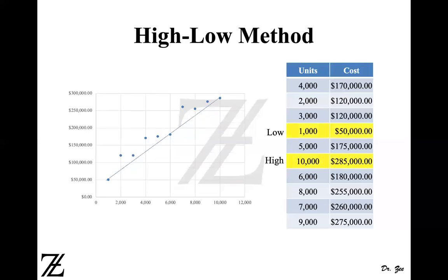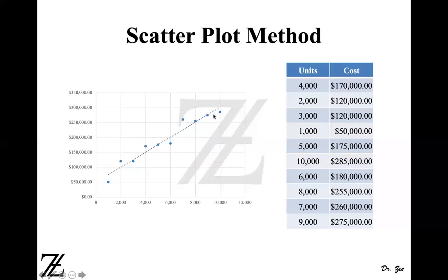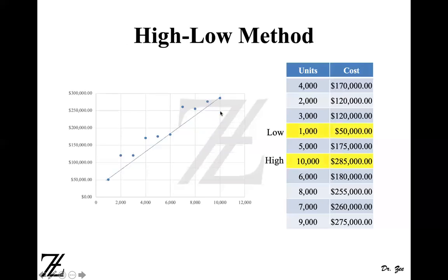Next, we move on to the HILO method. The HILO method uses the highest and the lowest level of the data points. So in the previous method, when we were using the scatter plot method, we were minimizing the distances, but this line was still not accurate. Whereas, in a HILO method, we use only the highest and lowest level of the data point, which makes this method even less effective.